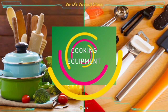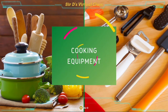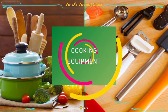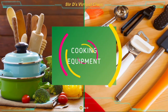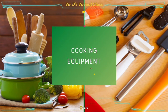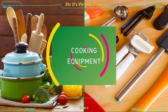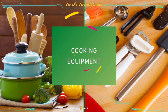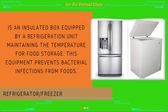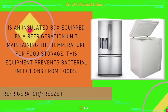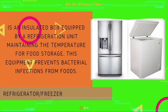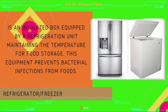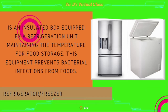Now, let's go to the cooking equipment. These are more complicated tools. It may refer to small electrical appliances such as blenders and ovens, or large power-operated equipment like refrigerators and freezers. Refrigerator-freezer is an insulated box equipped with a refrigeration unit, maintaining the temperature for food storage. This equipment prevents bacterial infections from food.